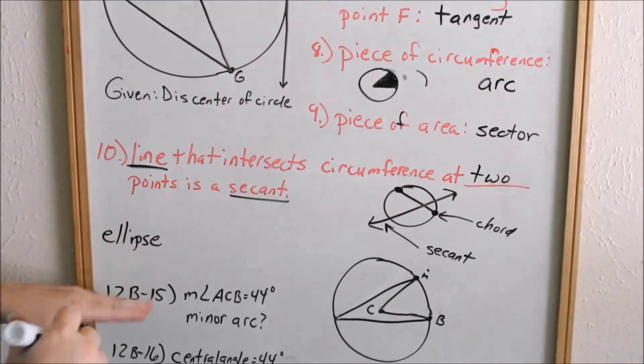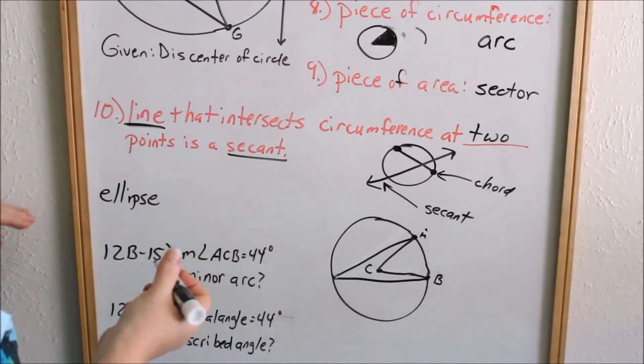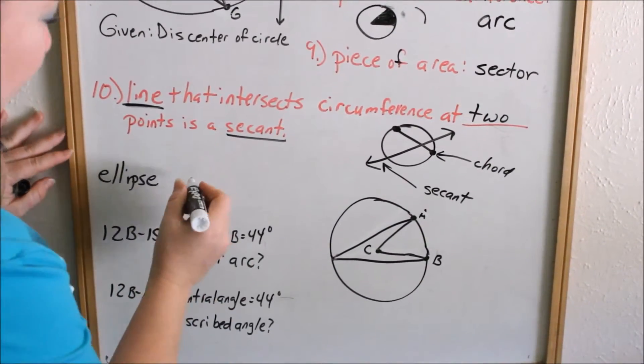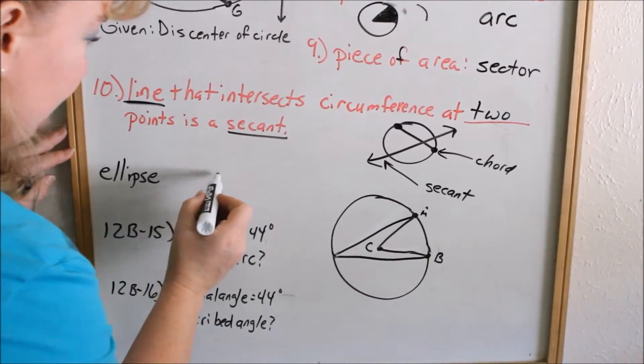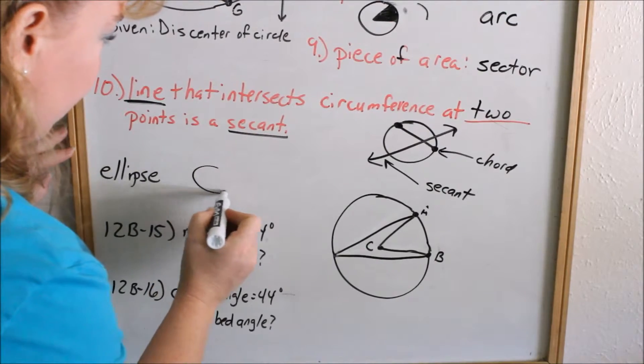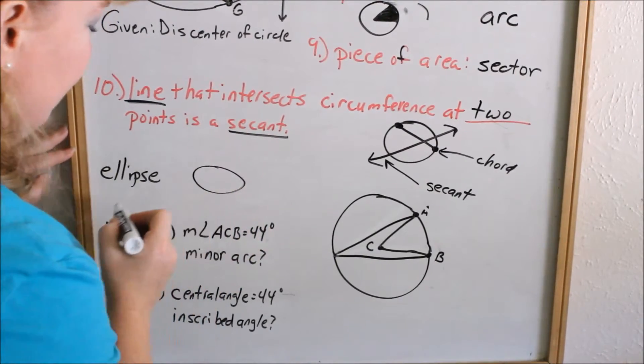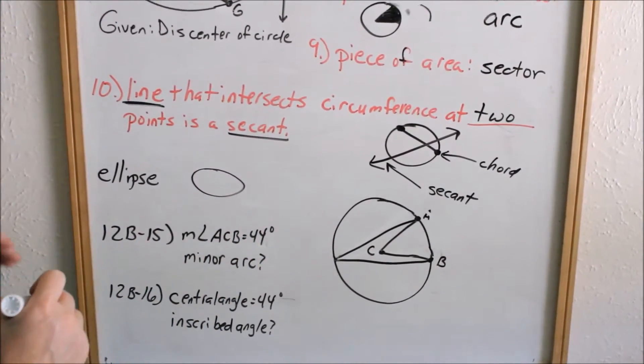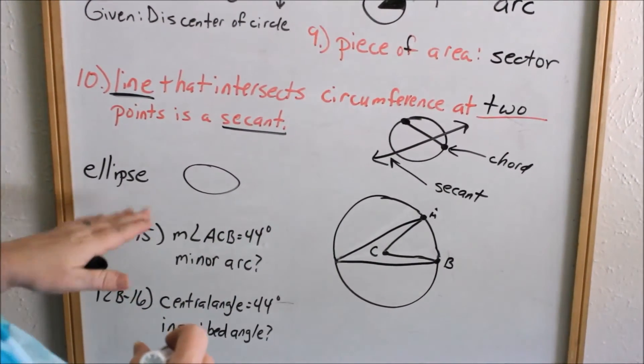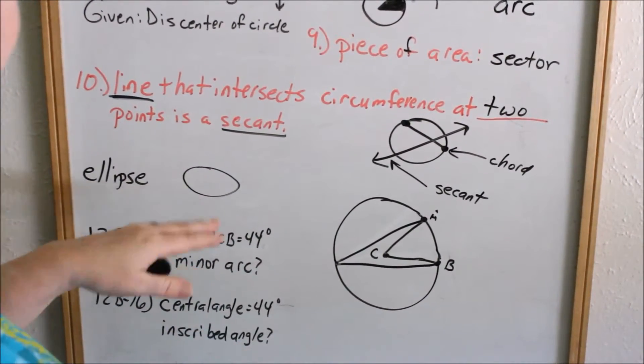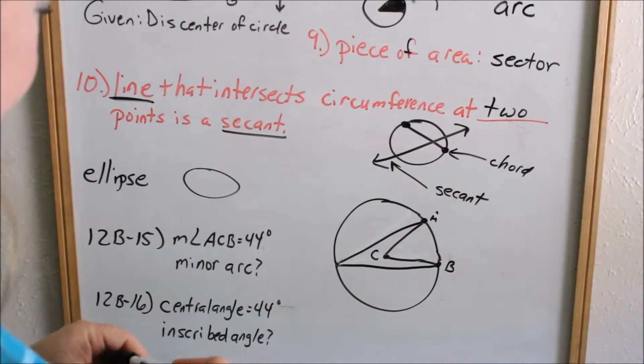The definition of an ellipse — you can think of it as an oval. I'll draw one for you. That's an ellipse.